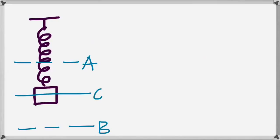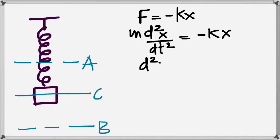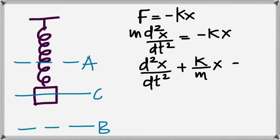F equals negative K X, where K is the spring constant. We know that force is mass times acceleration according to Newton's second law, so on the left-hand side you have M d²X/dt² equals minus KX. Dividing all terms by mass and rearranging gives a differential equation. Mass gets cancelled from one term and you switch sides.